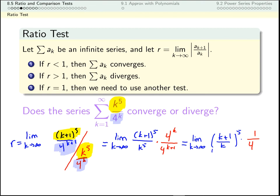Now this limit here, of course, is just 1. So r is equal to 1 quarter, and a quarter is less than 1. So by the ratio test, my series converges.